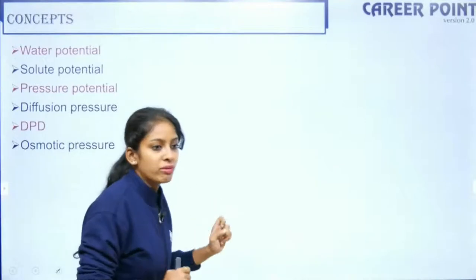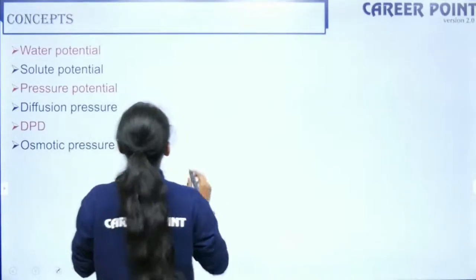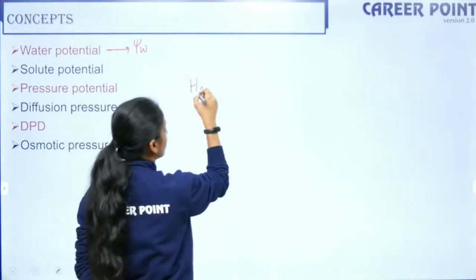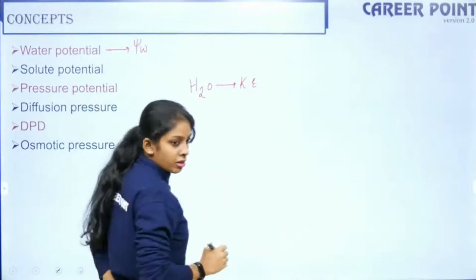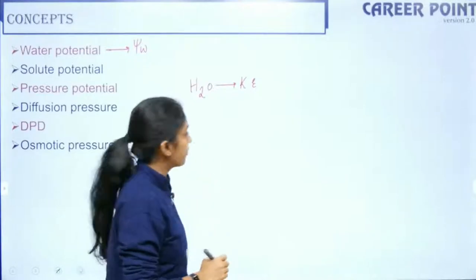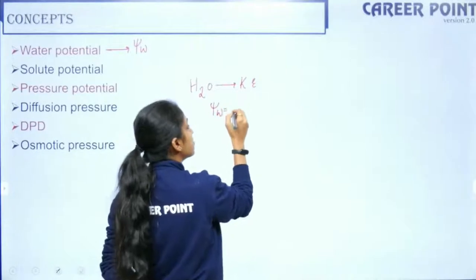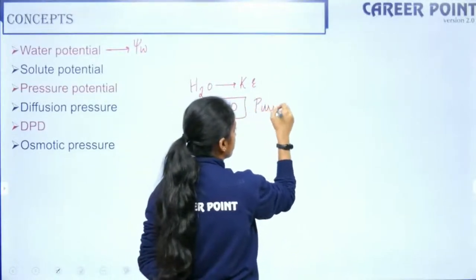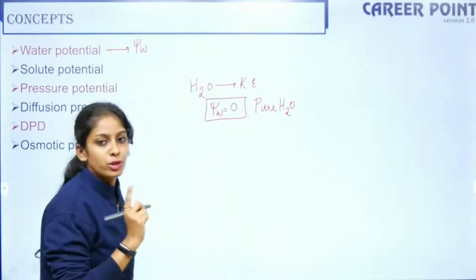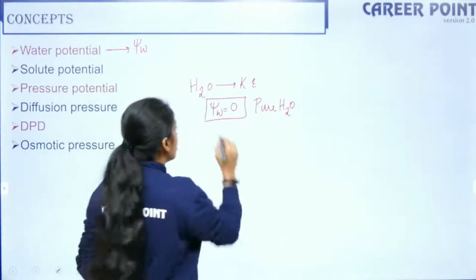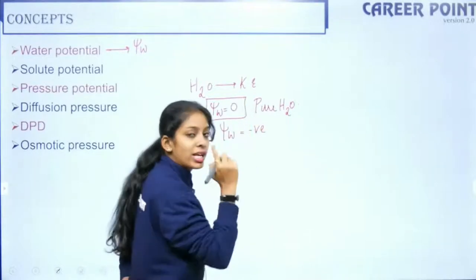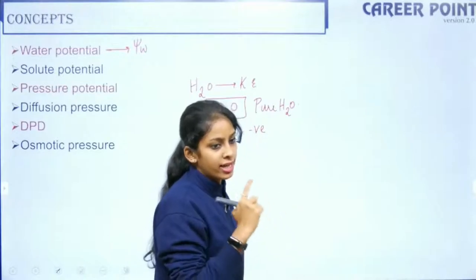So what is water potential? Water potential is denoted by the symbol ψ (psi). Water molecules have kinetic energy in them, and this ability of water molecules to possess high kinetic energy is known as water potential. The water potential of pure water is maximum — ψ_w equals zero. This is the maximum value. For a solution, your water potential would be negative. Water potential can never be greater than zero — this is the first point to remember.